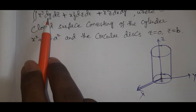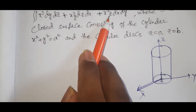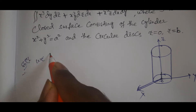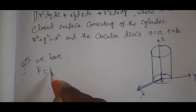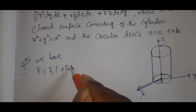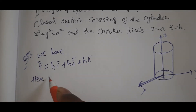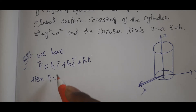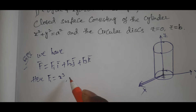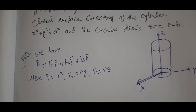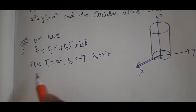The integral is: double integral of x³ dy dz + x²y dz dx + x²z dx dy. For the solution, we set F̄ = F1 î + F2 ĵ + F3 k̂, where F1 = x³, F2 = x²y, and F3 = x²z.